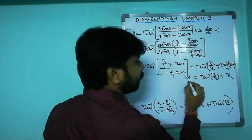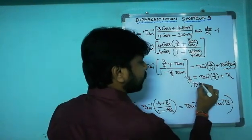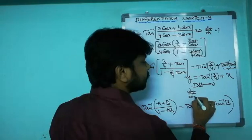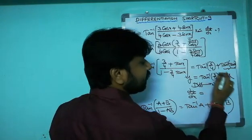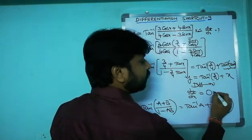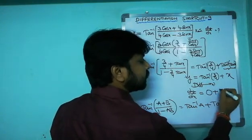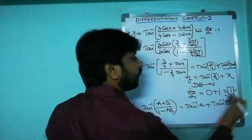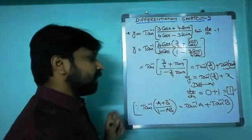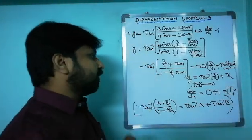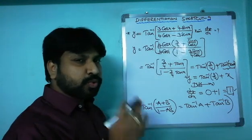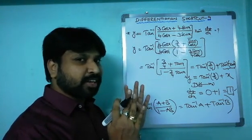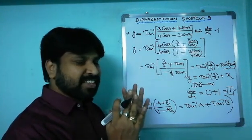Now differentiate with respect to x. The derivative of tan⁻¹(3/4) is 0 since it's a constant, and the derivative of x is 1. So dy/dx equals 1. It's a beautiful question!